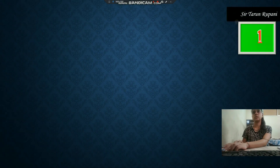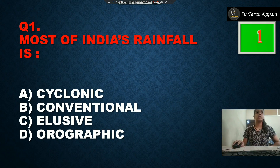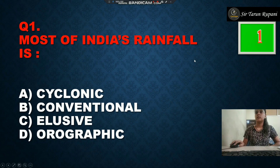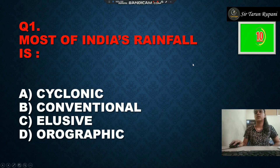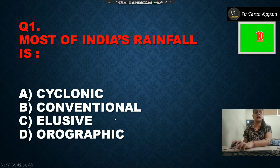We are going to question number one. Question number one is: most of India's rainfall is — option A is cyclonic, option B is convectional, option C is orographic, and option D is frontal. The time is up and the right answer is option number B, convectional.